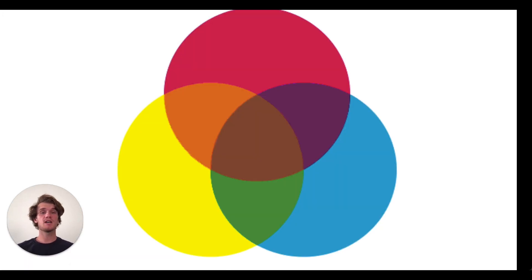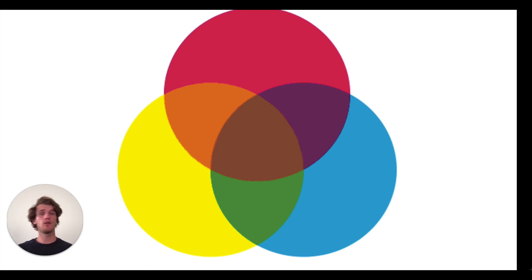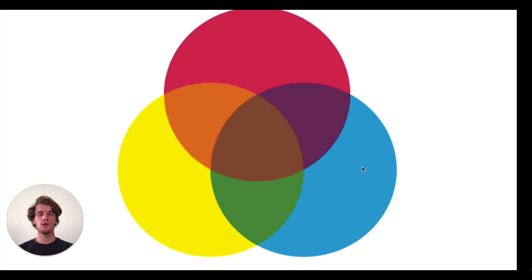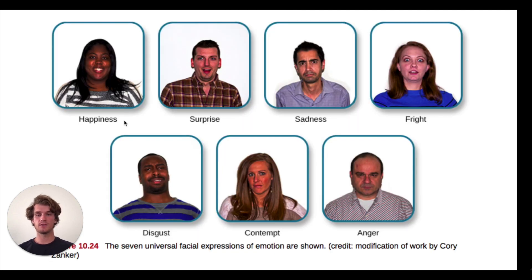Today we're going to be talking about universal emotions, and I tend to think of these universal emotions as kind of being like primary colors. These are the most basic, most rudimentary emotions, and although we have so many cultural differences, we are all able to recognize these emotions across cultural boundaries. Similar to red, yellow, and blue, we have seven primary emotions.